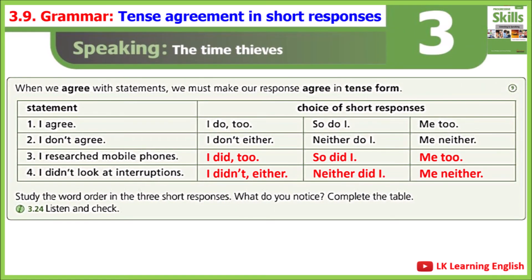3.24, Lesson 3.9: Grammar for speaking - tense agreement in short responses. Grammar Box 15. One: 'I agree.' 'I do too.' 'So do I.' 'Me too.' Two: 'I don't agree.' 'I don't either.' 'Neither do I.' 'Me neither.' Three: 'I researched mobile phones.' 'I did too.' 'So did I.' 'Me too.' Four: 'I didn't look at interruptions.' 'I didn't either.' 'Neither did I.' 'Me neither.'